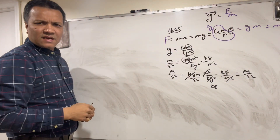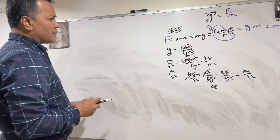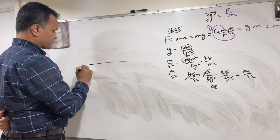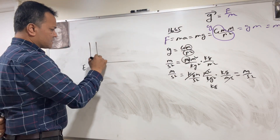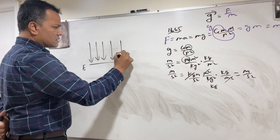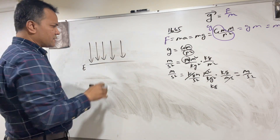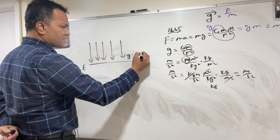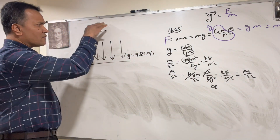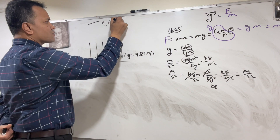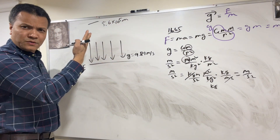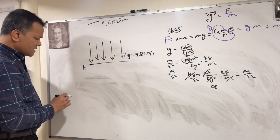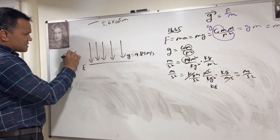We're going to give you an example. Let's say this is the Earth and this is the gravitational field. If you put an object near the Earth, the gravitational field gives you 9.81 m/s². If you put it 10⁵ meters above the ground, it would not be 9.81 — it's going to be less.